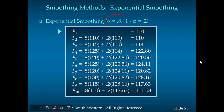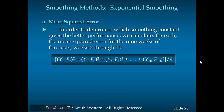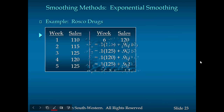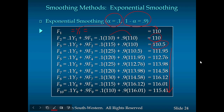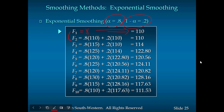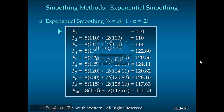For α = 0.8, 1 − α = 0.2. The first couple of values are the same: F1 = Y1 = 110. For the second calculation, F3 = 0.8·115 + 0.2·110 = 114. Starting from the third number, all the values differ between the two methods. We use the mean square error to see which smoothing constant gives better accuracy.